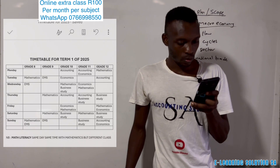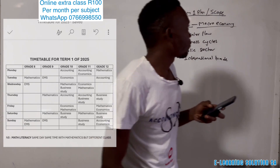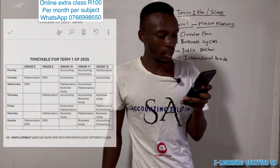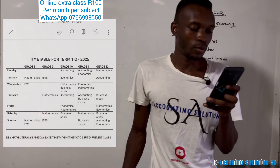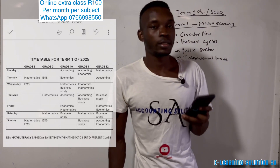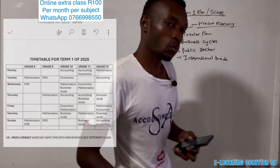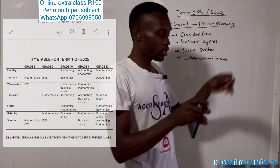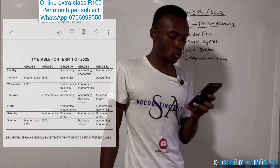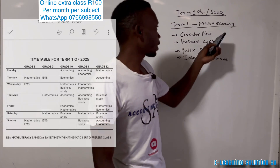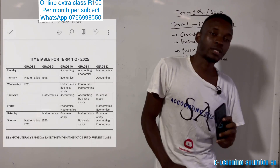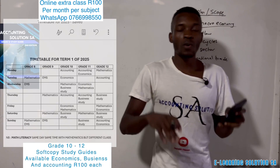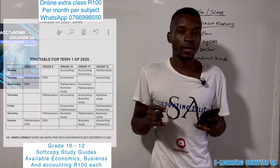In other words, we only have four topics for macro economy in Grade 12. They may look few but they are very long. Each topic will be covered over two weeks, except business cycles which is given three weeks because it is longer than the others.